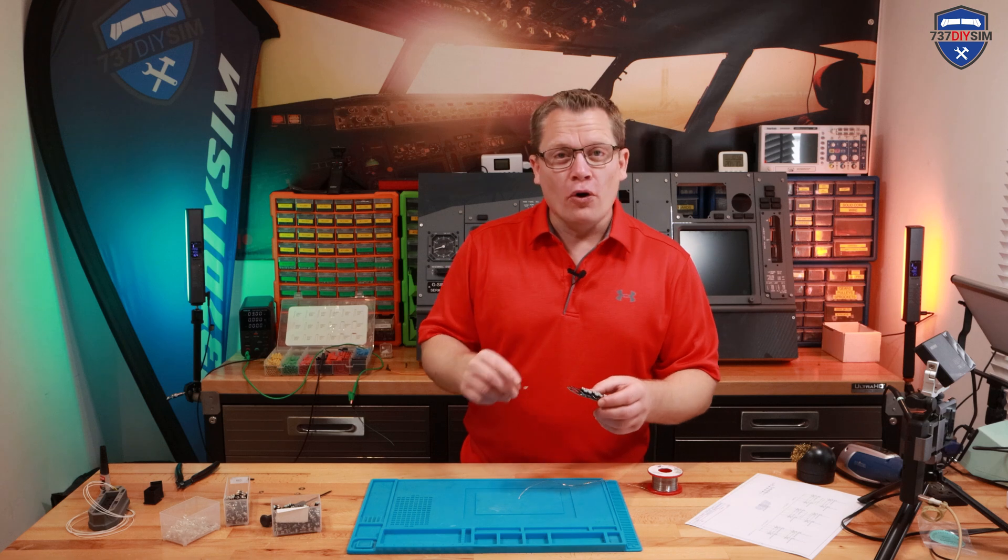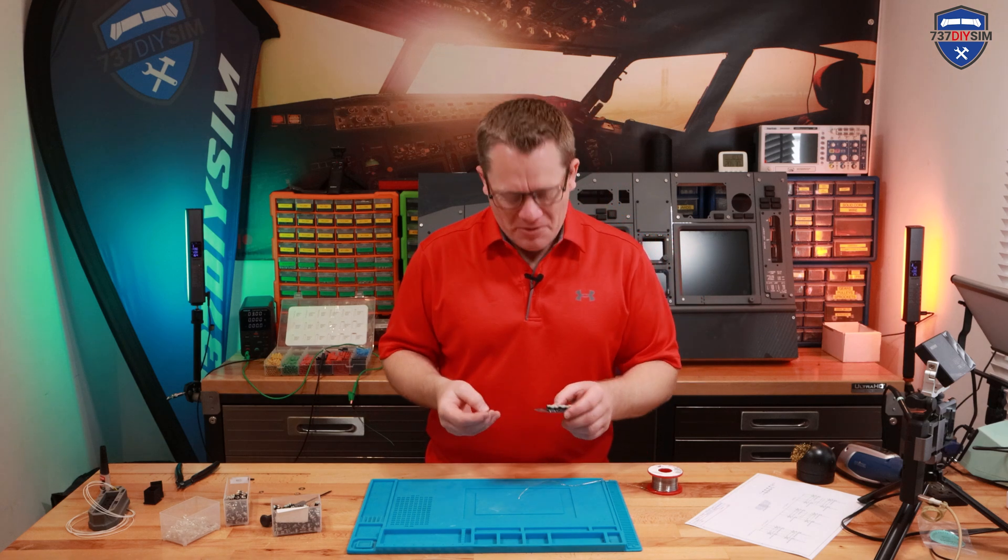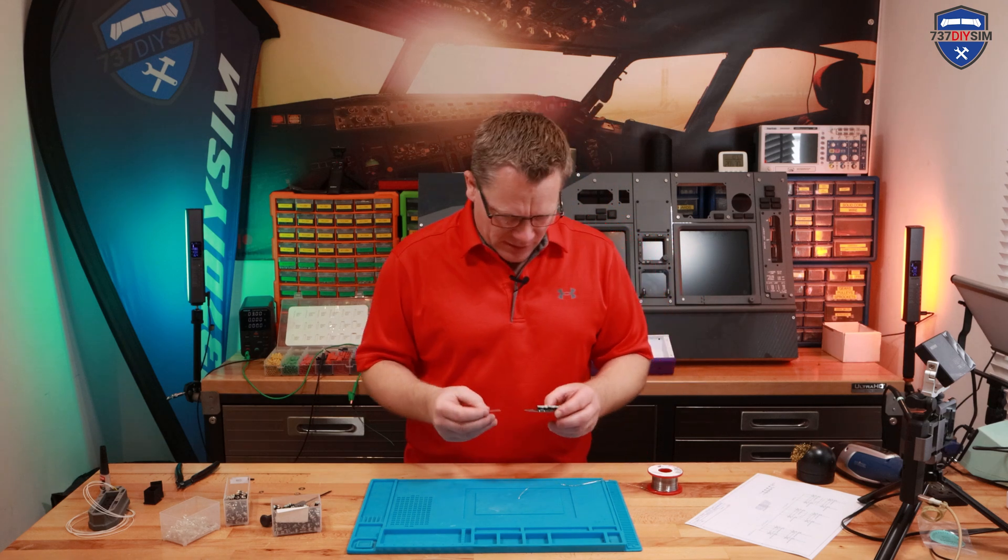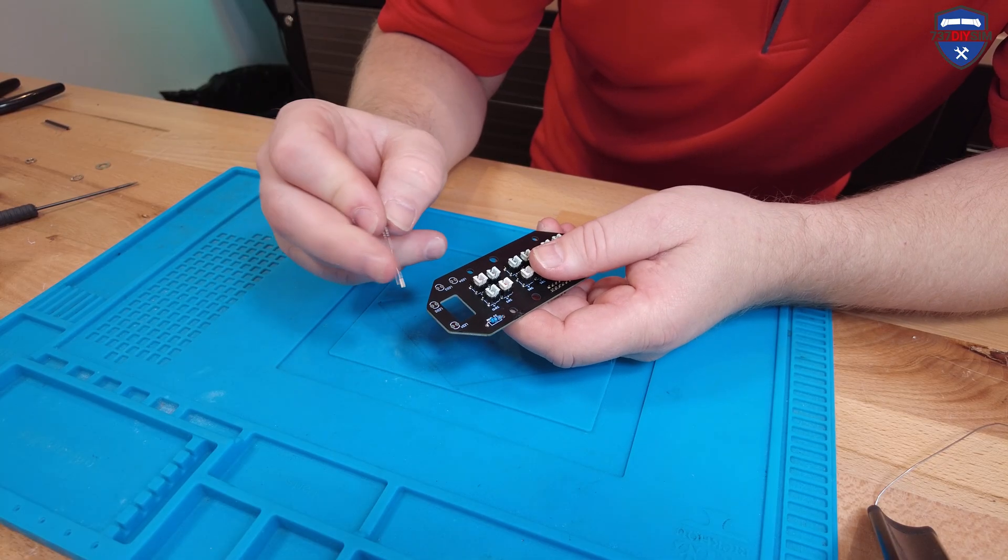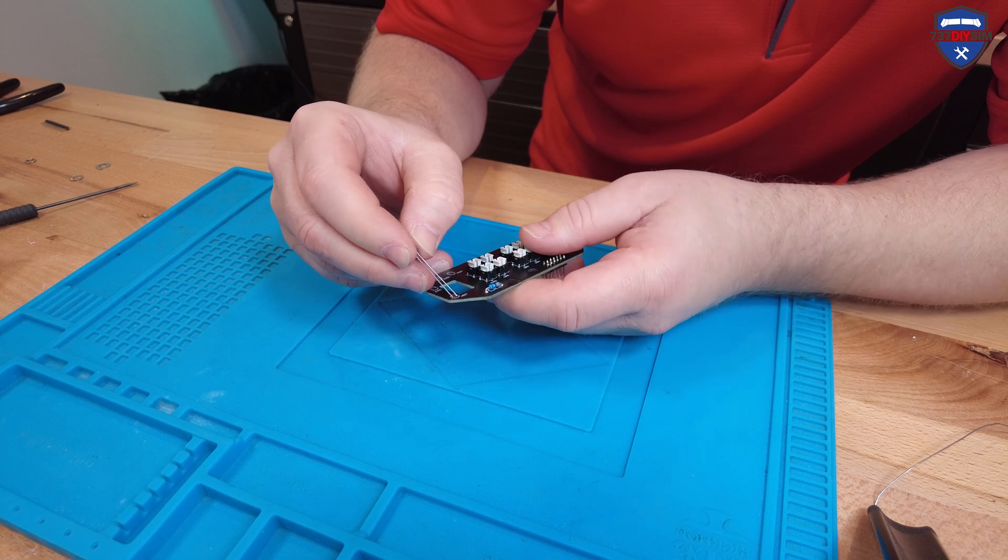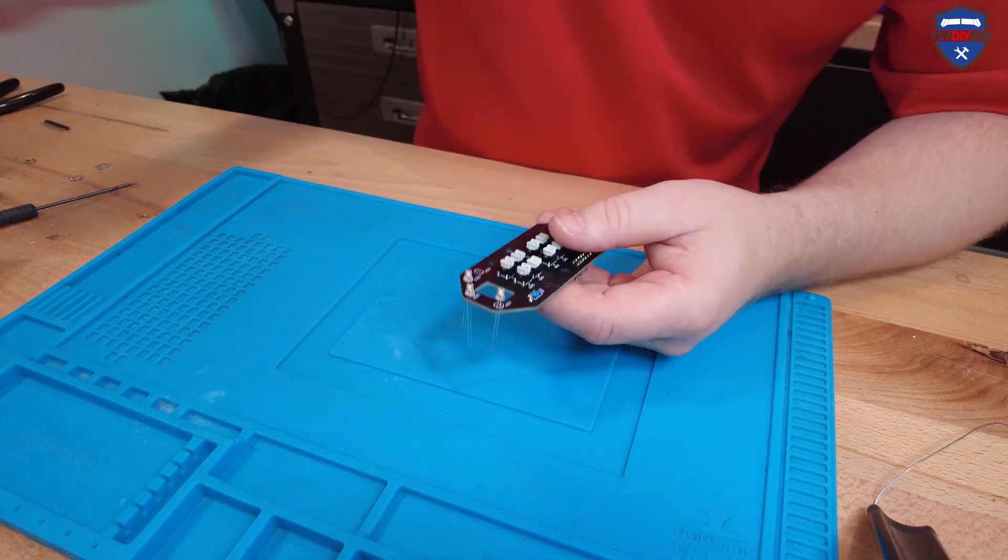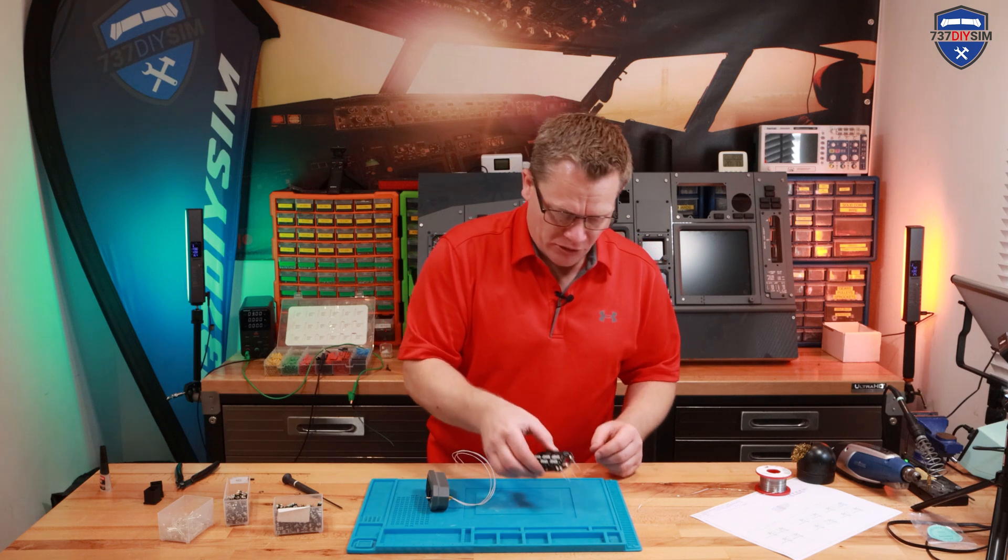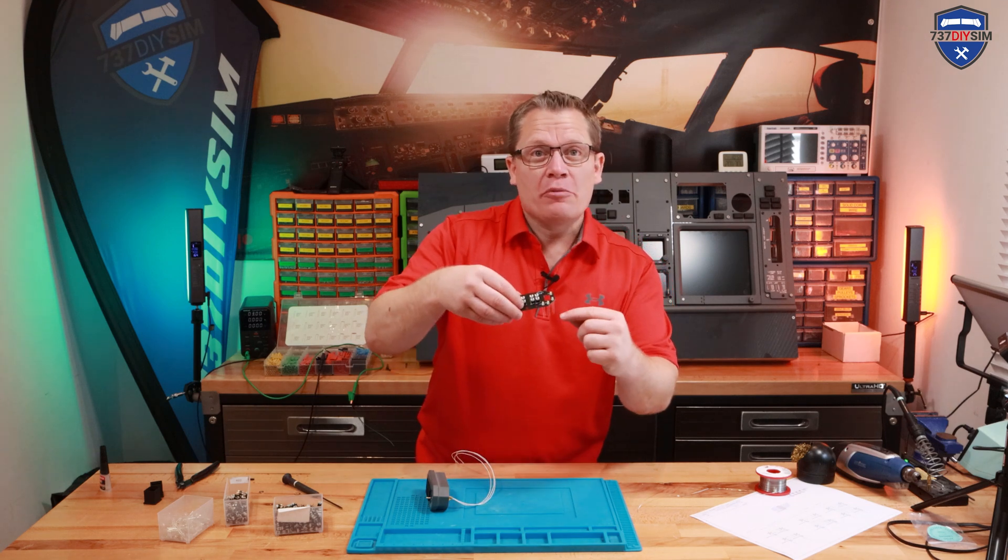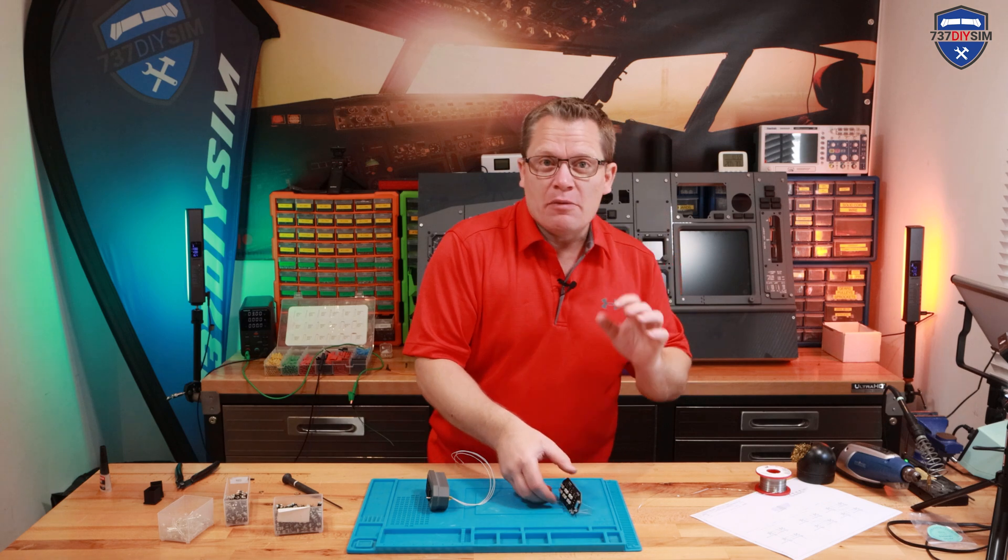And that now just leaves the four three millimeter LEDs to go in. This is just for backlighting. So we've got the flat side of the LED on the PCB board. I'm going to make sure that the shorter leg goes in there. So before we solder the LEDs in position, now you can solder them flat with the board. There's no problem. It just dims the light a little bit.